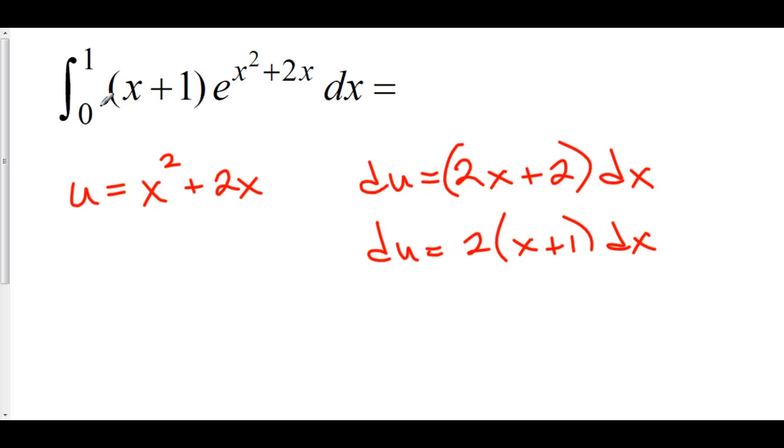Now again, I don't have a 2 anywhere around here, so I could divide everything by 2, yielding 1 half du is equal to quantity x plus 1 dx. Well, I have an x plus 1 dx, so I'll substitute in 1 half du for that x plus 1 dx.